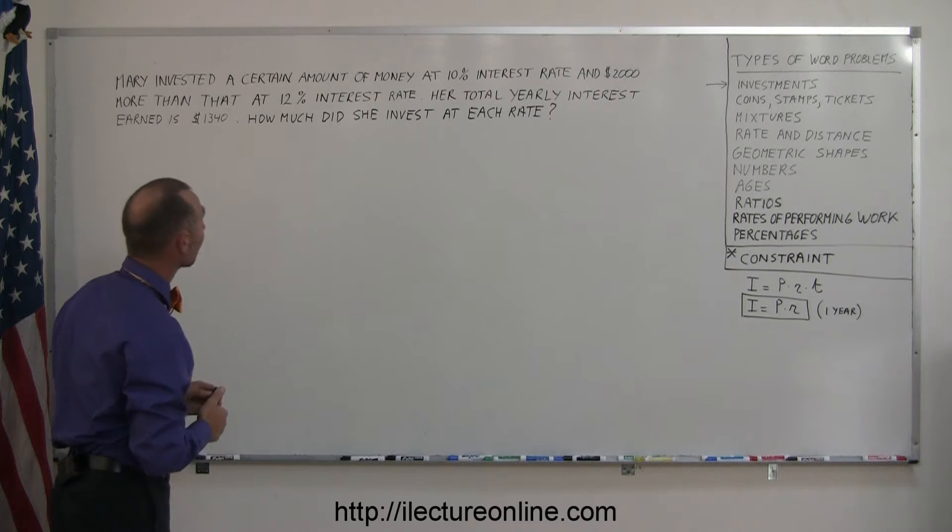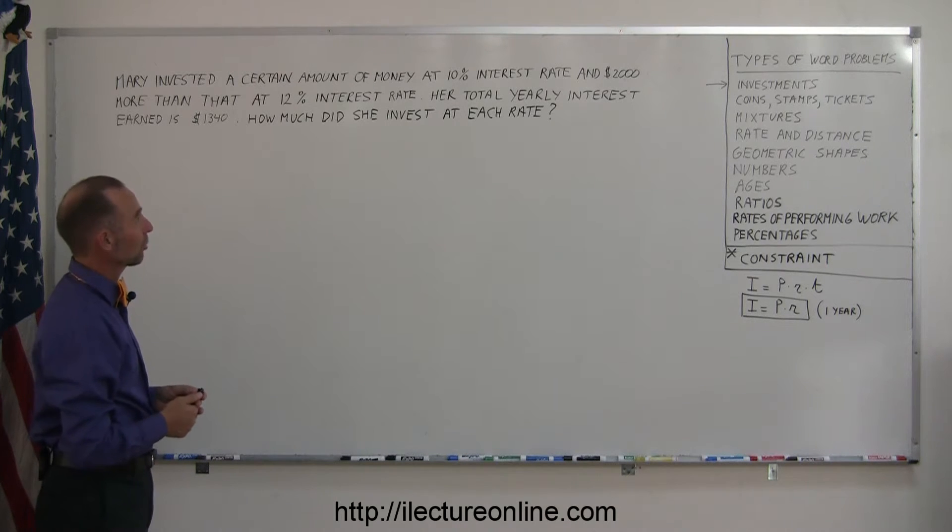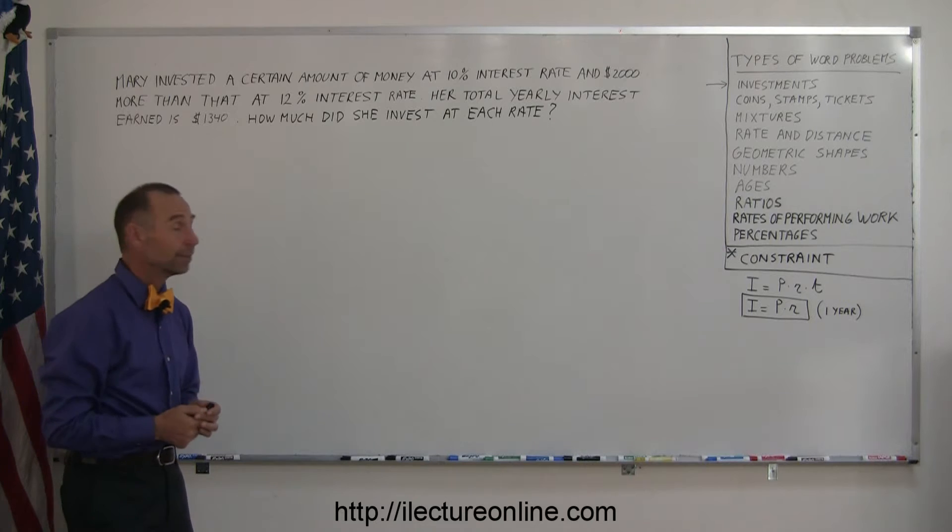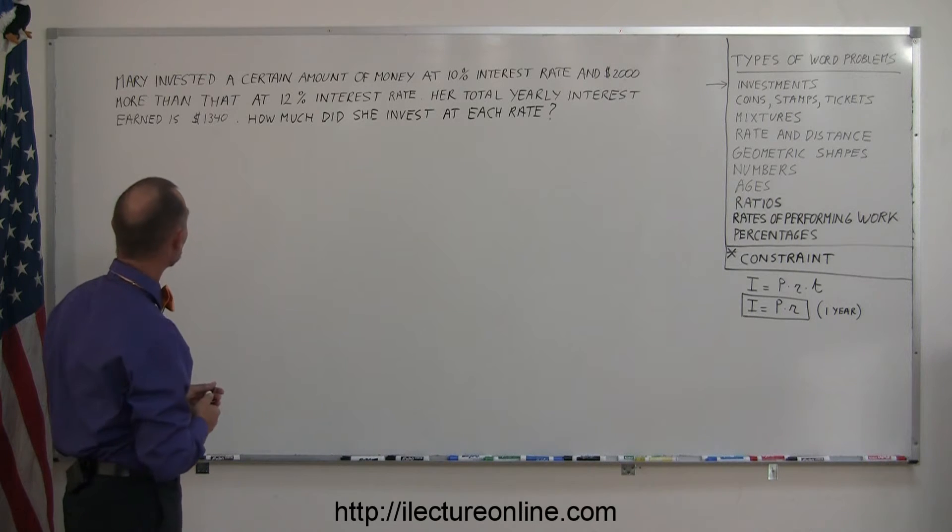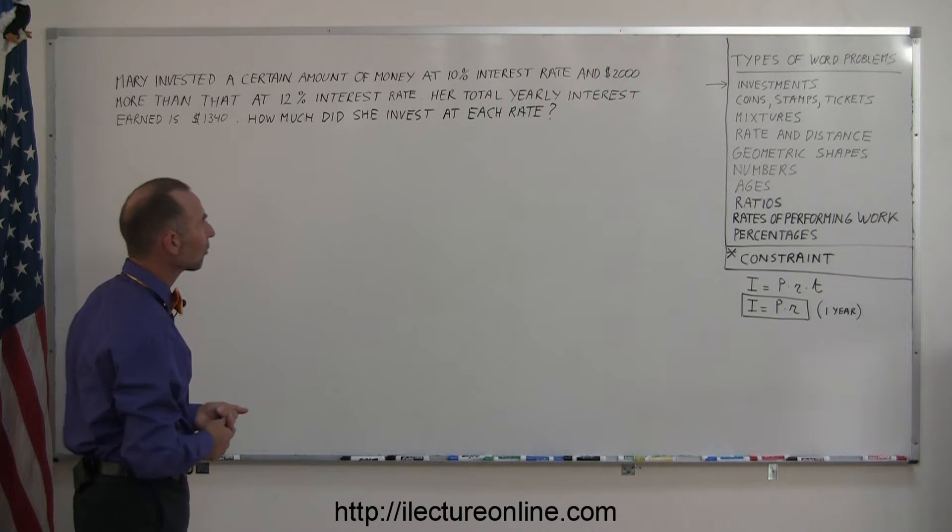Mary invested a certain amount of money at 10% interest rate and $2,000 more than that at 12% interest rate. Her total yearly interest earned is $1,340. How much did she invest at each rate?